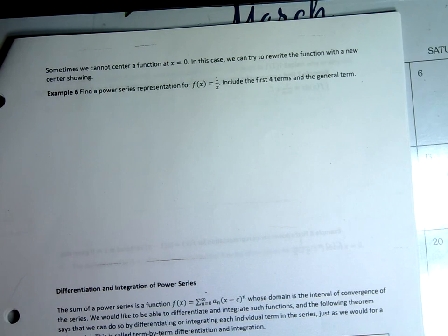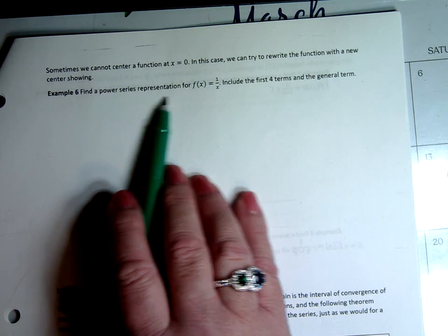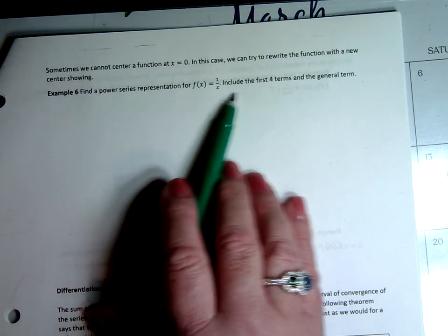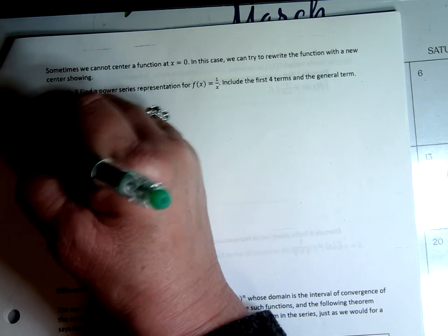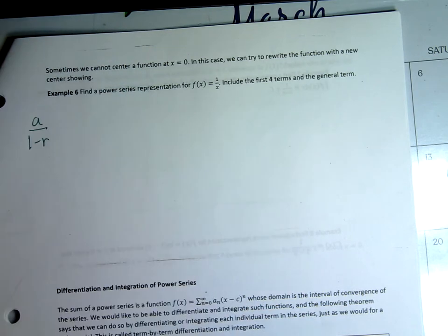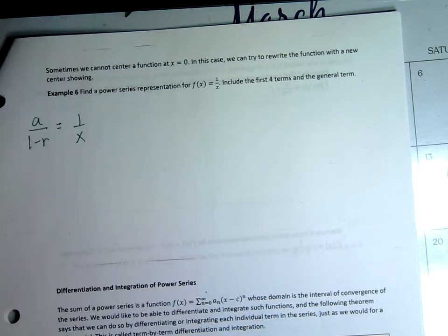Sometimes we can't center a function at x equals 0. In this case, we can try to rewrite the function with a new center. This is example six: find a power series representation for the function 1 over x. Include the first four terms and the general term. We know we're trying to get them in the form of a over 1 minus r — that's the summation formula for the geometric series.